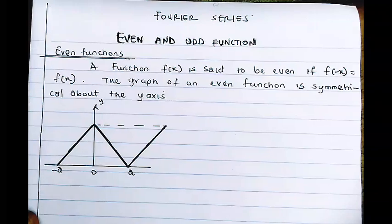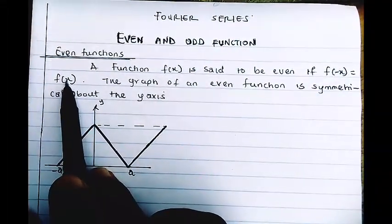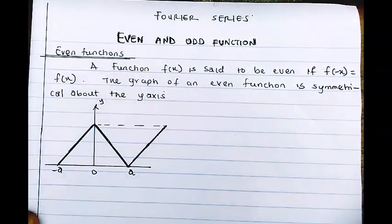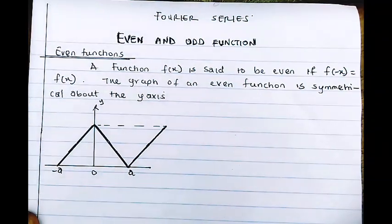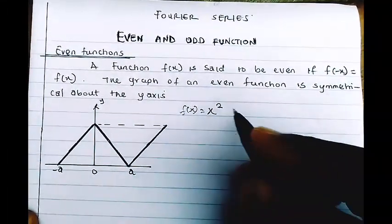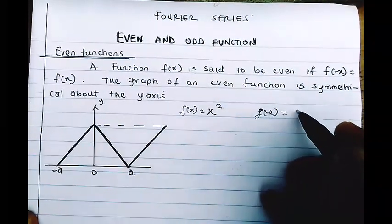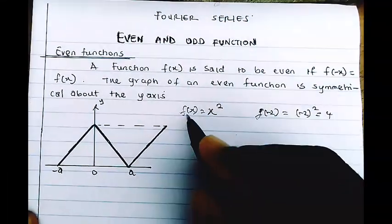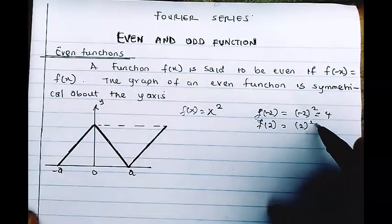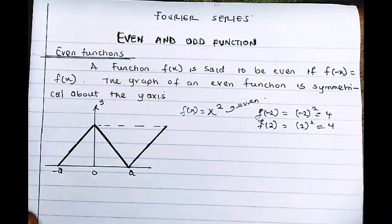What we have in front of us is an even and odd function. So what is an even function? An even function is said to be even if f(−x) equals f(x). What this means is that if I put a negative x in a function and the value equals when I put positive x, that function is even. For example, consider f(x) = x². If I put −2, I get (−2)² = 4. And with +2, I also get 4. So x² is an even function.